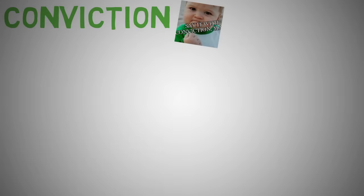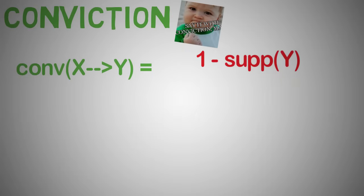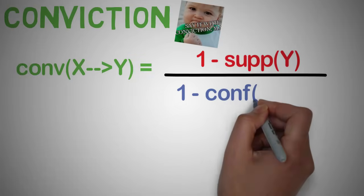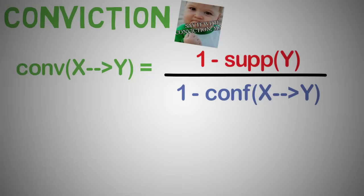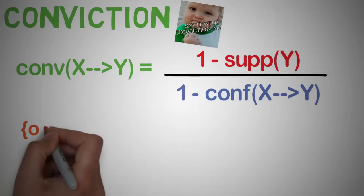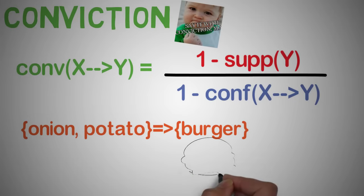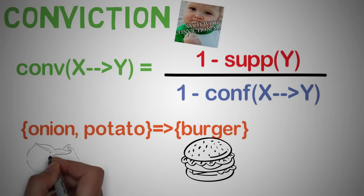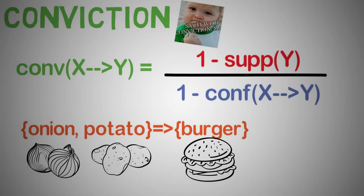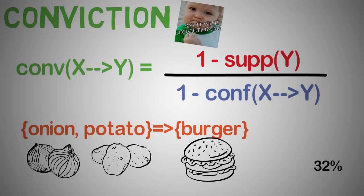Conviction of a rule is defined as: conviction of X → Y equals (1 minus the support of Y) divided by (1 minus the confidence of X → Y). For this rule, a burger is bought given that we have onions and potatoes. A conviction value of 1.32 means that the rule onions and potatoes → burgers would be incorrect 32% more often if the association between X and Y was accidental chance.